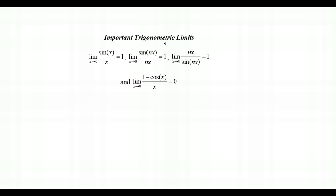Let's talk about some important trigonometric limits. The first says the limit as x approaches 0 of sine x over x equals 1 — this is just a given fact. It extends further: the limit as x approaches 0 of sine(nx) over nx also equals 1, provided the same expression appears in both numerator and denominator under the sine function, and x goes to 0.